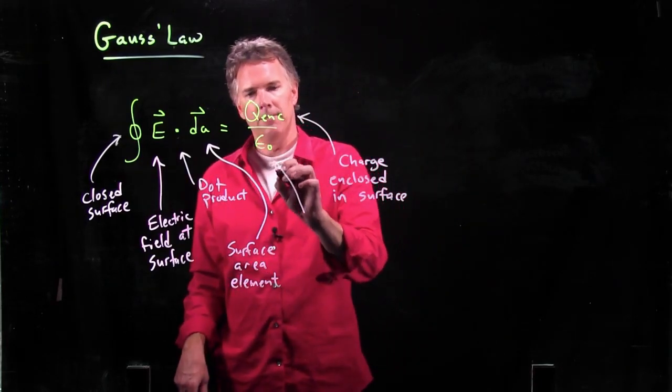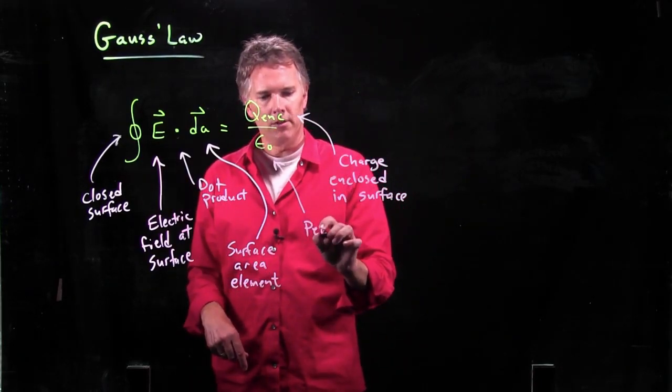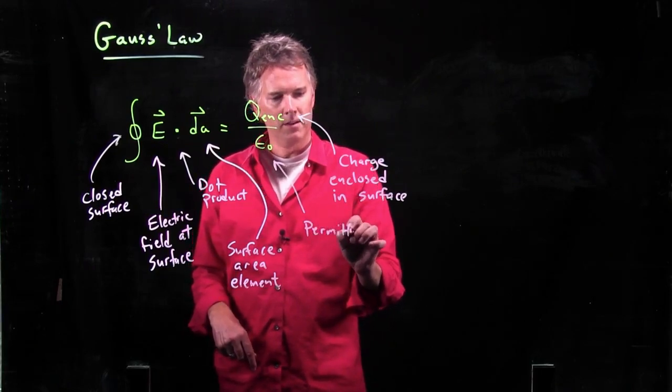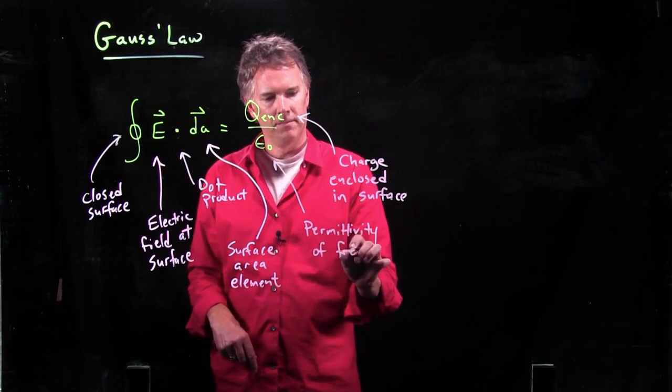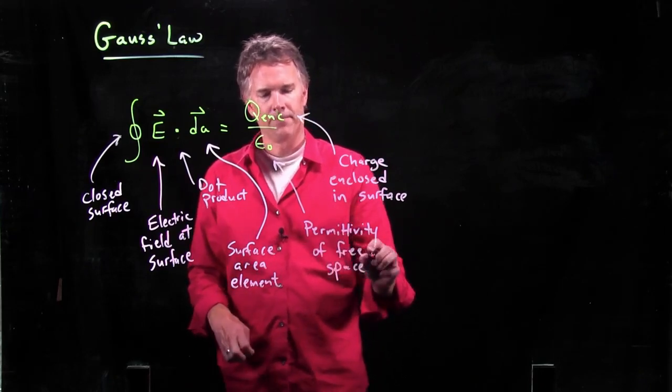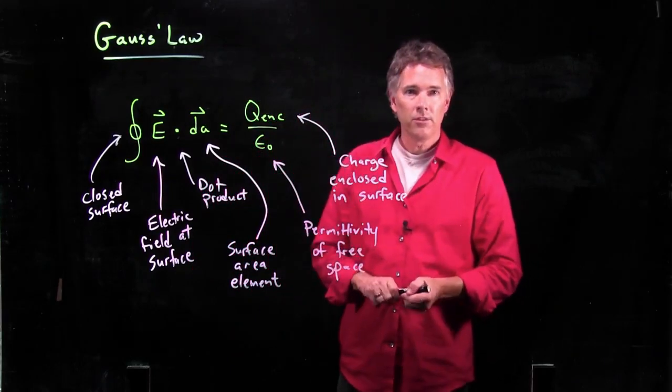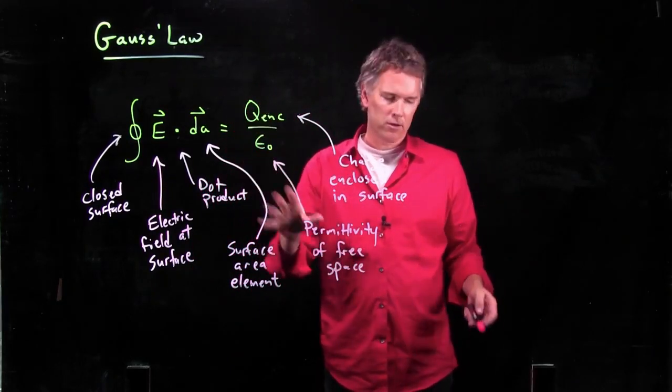What about epsilon naught? That is our good old permittivity of free space. Okay, so this is Gauss's law in mathematical form.